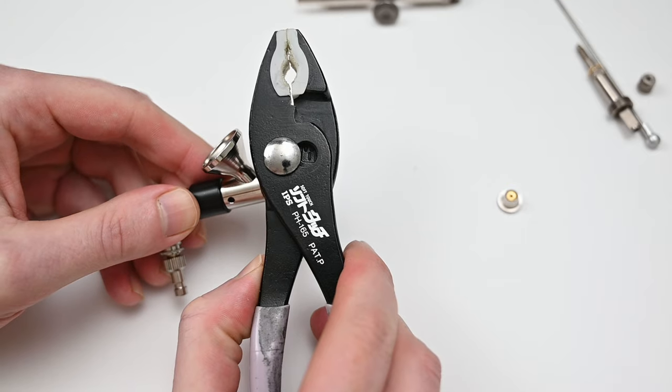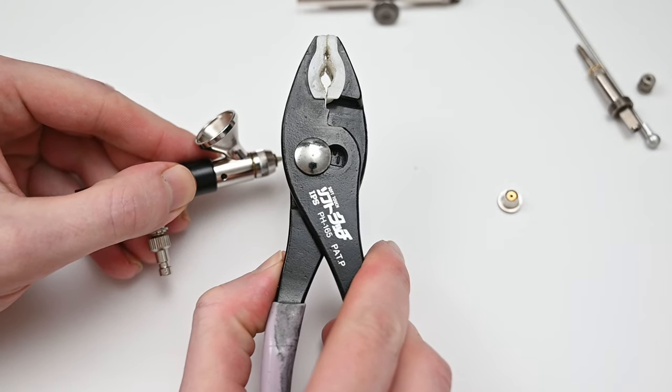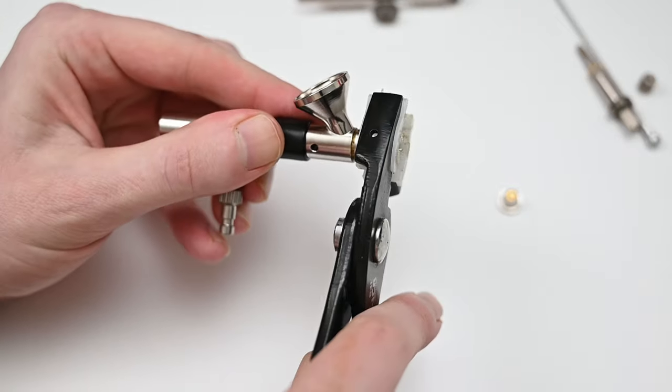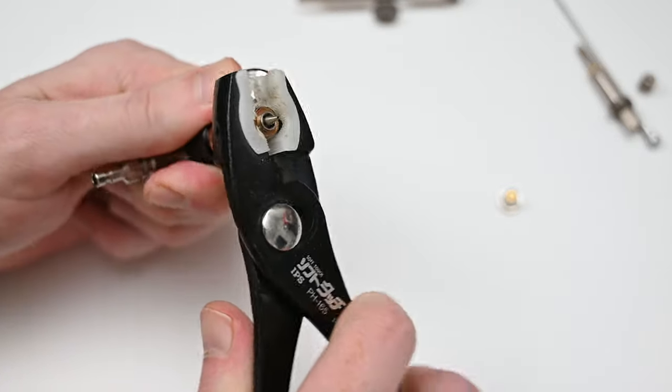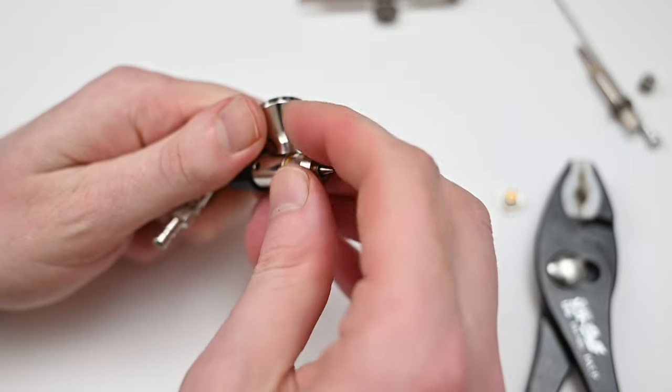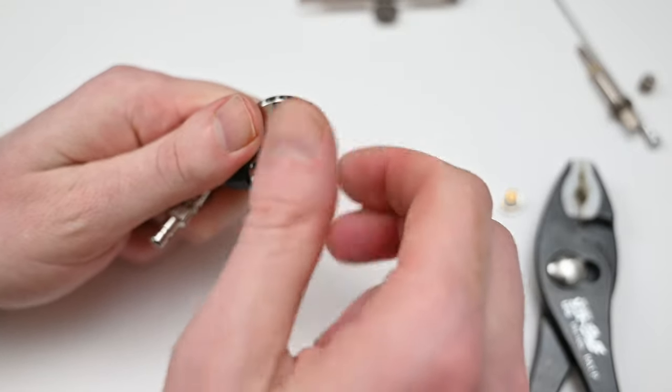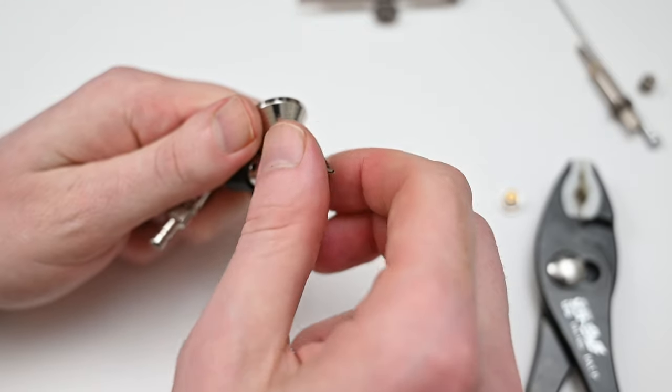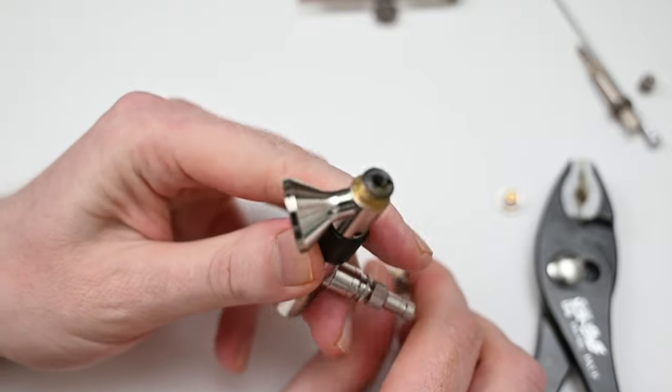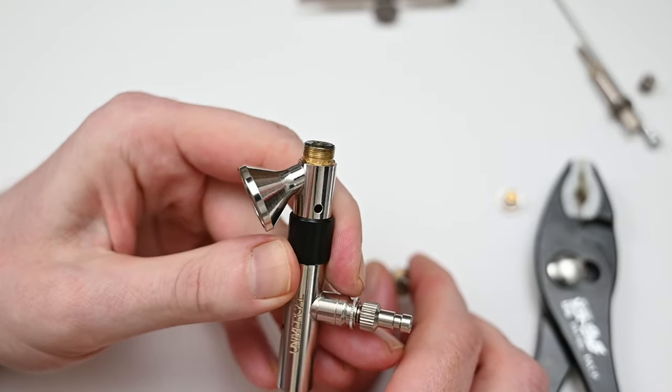And to unscrew the air cap, which is sometimes difficult to do by hand, I always recommend picking up these inexpensive soft jaw pliers, which I'll have a link for down below. Just remember that everything on an airbrush should always be hand tight, but sometimes some of the parts are a bit sticky and it's hard to remove by hand. This model was brand new and I wasn't able to grip it by hand, so it's always a good idea just to have a pair of these on hand so that you don't scratch your airbrush.